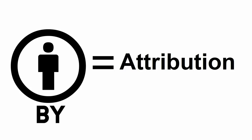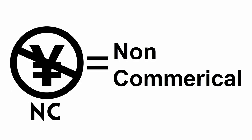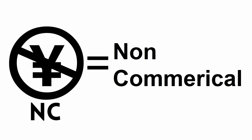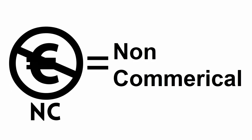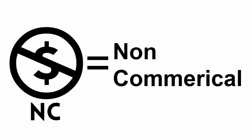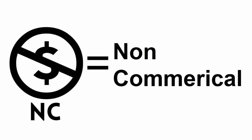A symbol with a person means attribution — you must give credit to the author for using the work. A symbol with a yen, euro, or dollar sign currency crossed out means it cannot be used for commercial purposes.